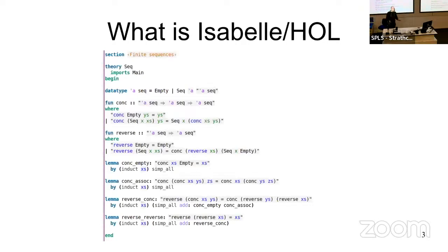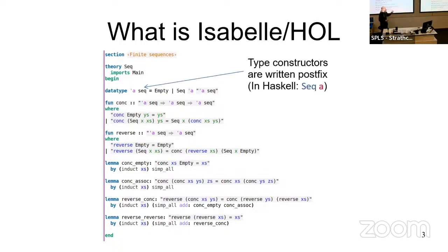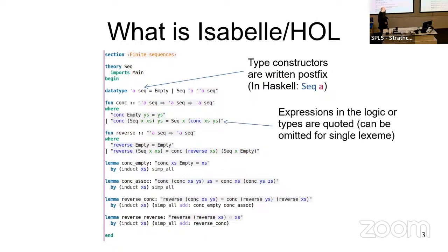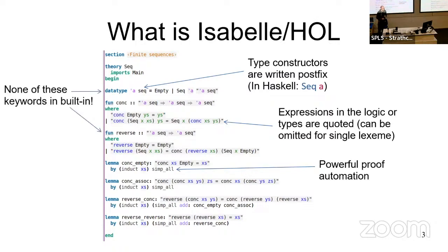What is Isabelle? Isabelle is a theorem prover based on simple type theory, so there's no dependent types. Constructors are written after their parameters, ML style. Expressions in the logic itself are quoted. It has a lot of very powerful proof automation. And the important part for my work: none of these things that look like built-in syntax are actually built-in. Isabelle allows the user to define new syntax for the language, including the data type command where I will hook in. I'm working on formalizing Haskell core and want to extend it later with rows.